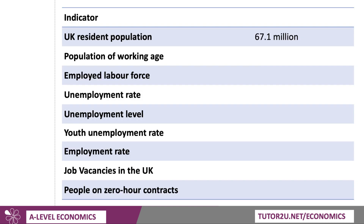Let's look at some key data on the labour market, because having an awareness of some of the key stats can be fantastic for adding application into your 2022 exam answers and also supporting evaluation. The UK resident population is 67.1 million, which has increased over time, particularly with a decade or more of fairly strong net inward migration. Of that population, about 41 million is of working age, and of those, there are about 32.5 million people in work. Around 8 million of those, just about a quarter, are people in part-time work.